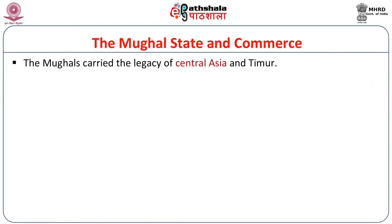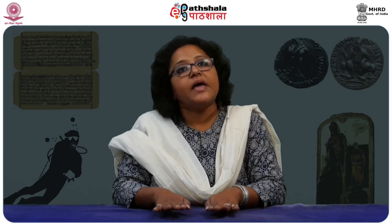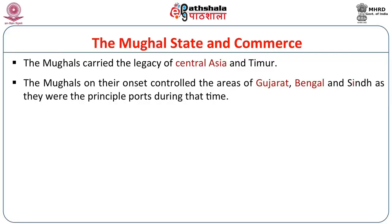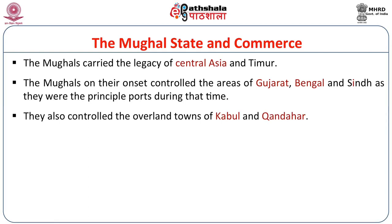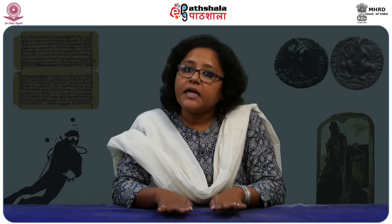The Mughals carried the legacy of Central Asia and Timur. When evaluating the Mughal state and commerce, we have to keep in mind that the Mughals continued in this tradition, but they never had an imperial policy — it was the individual interest of the royals that drove involvement in commerce. The Mughals on their onset tried to control areas of Gujarat, Bengal and Sindh, as these were the principal ports, but again it never became an imperial policy. The overland towns of Kabul and Kandahar always remained within the grip of the Mughals. There was also an unhealthy trend where nobles tried to monopolize trade in some goods.